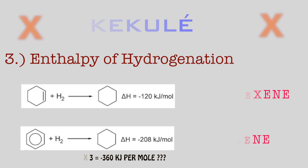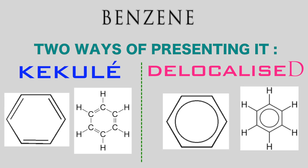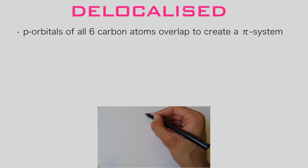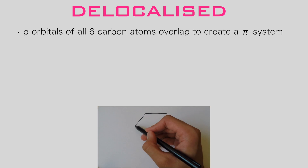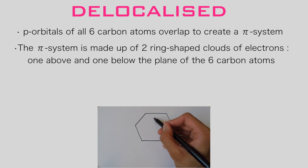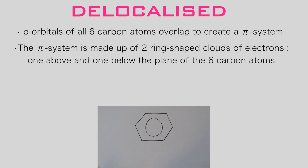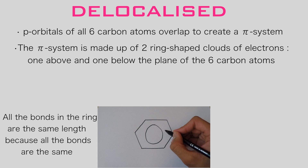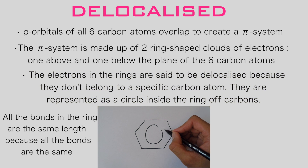The now widely accepted structure for benzene is known as the delocalized model. This model states that the p orbitals of all six carbon atoms overlap to create a pi system, made up of two ring-shaped clouds of electrons — one above and one below the plane of the six carbon atoms. All the bonds in the ring are the same length because all the bonds are equivalent, and the electrons in the ring are said to be delocalized because they do not belong to any specific carbon atom.